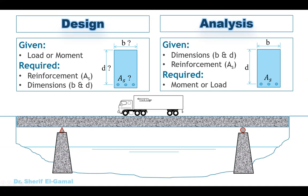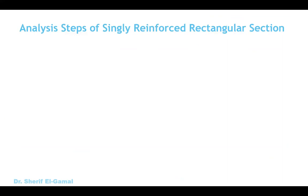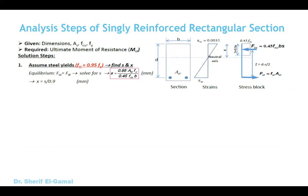Within this video we'll be learning how to analyze a singly reinforced rectangular section. After that we'll go to doubly reinforced rectangular sections and also flanged sections in coming videos. The analysis steps: as you know, the given will be the dimensions, area of steel, concrete compressive strength f_cu, and the yield strength of the steel reinforcement. The required will be the ultimate moment of resistance, and also we can determine the maximum load that can be carried by a beam, bridge, or any structural element.